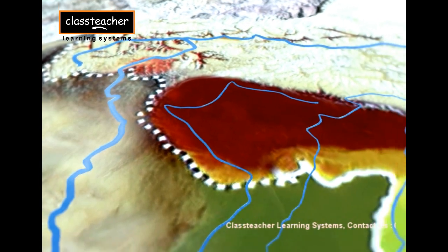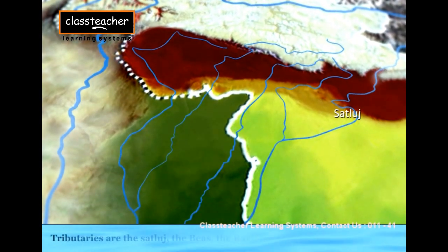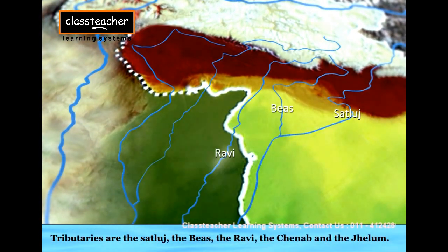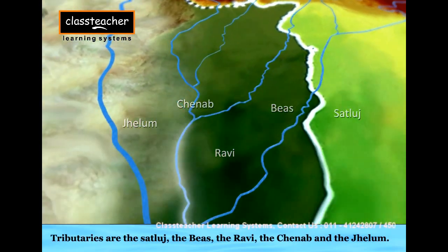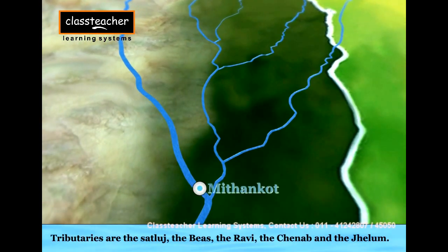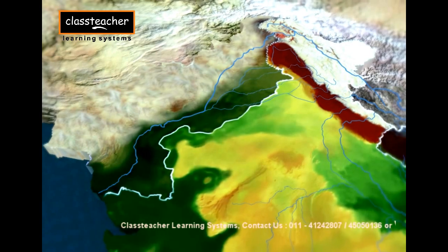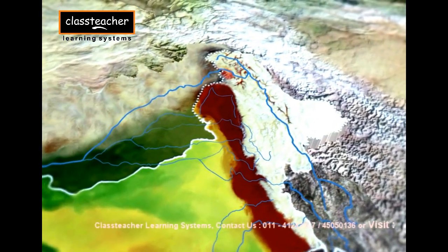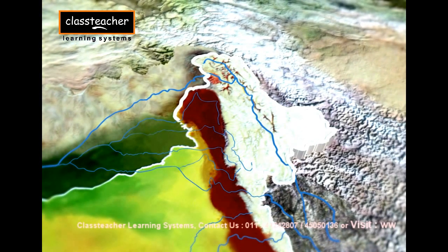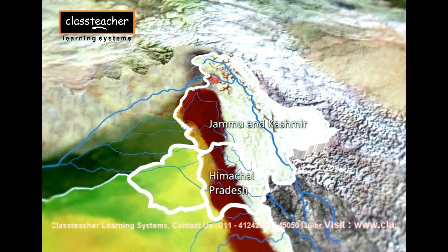The river flows southward and is joined by the Satlaj, the Bayas, the Ravi, the Chinab, and the Jhelam near Mithankot. It finally discharges into the Arabian Sea. A little over a third of the Indus basin is located in India, in the states of Jammu and Kashmir, Himachal Pradesh, and Punjab.